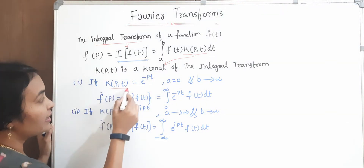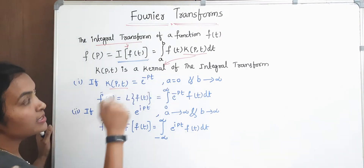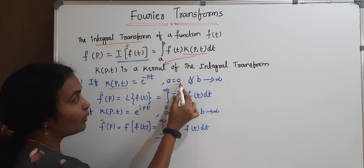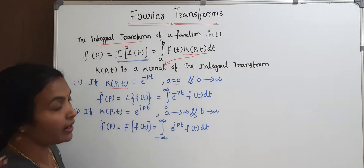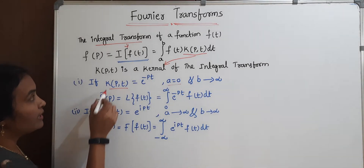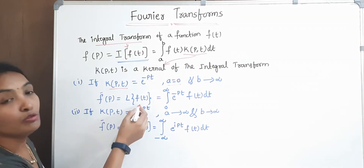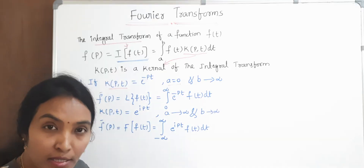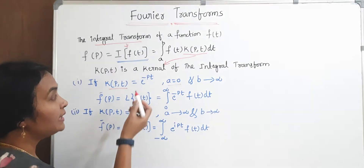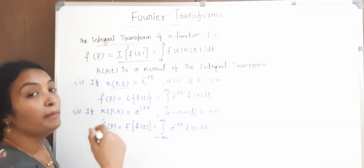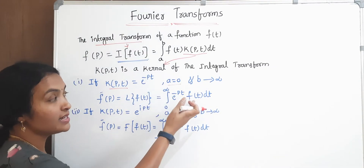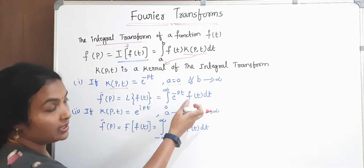Suppose I consider the kernel is e to the power of minus pt. If the kernel value is this, then the boundaries are a=0 and b=infinite. Then what is the function? It will change to the Laplace of f(t). With kernel value e to the power of minus pt, it will convert to the Laplace transform. What is our Laplace definition? It is the integral from 0 to infinite of e to the power of minus st times f(t) dt.